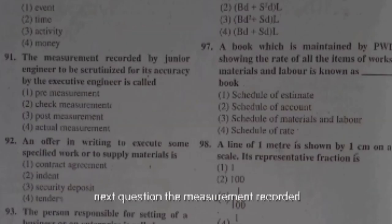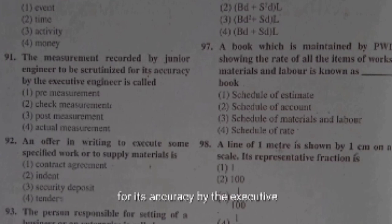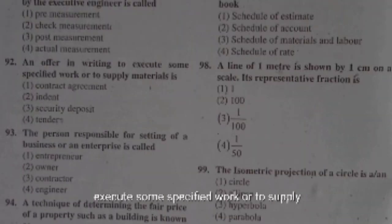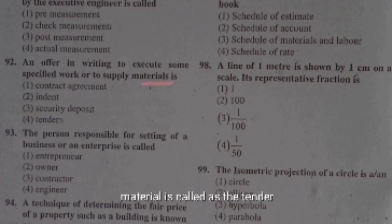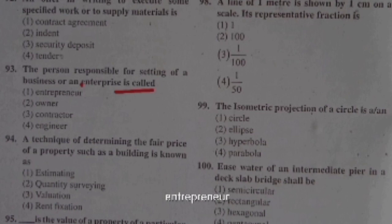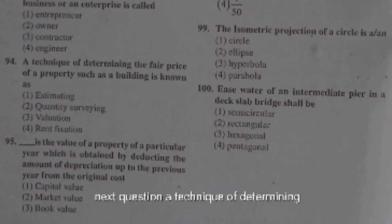The CPM method is activity-oriented and the PERT method is event-oriented. The measurement recorded by a junior engineer to be scrutinized for accuracy by the executive engineer is called check measurement. An offer in writing to execute some specified work or to supply material is called a tender.